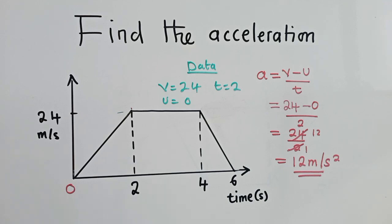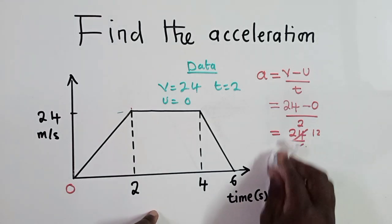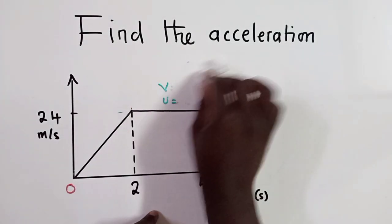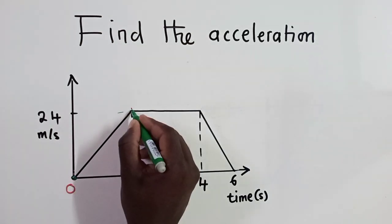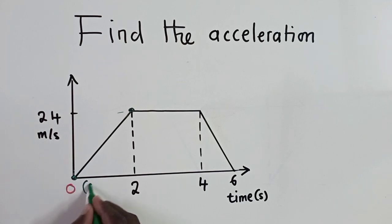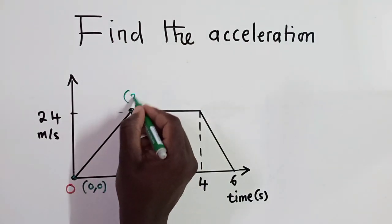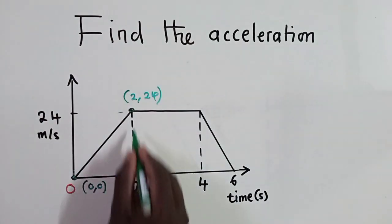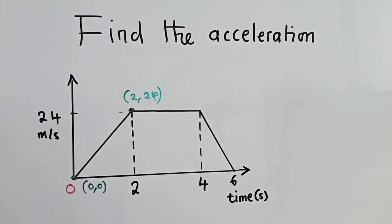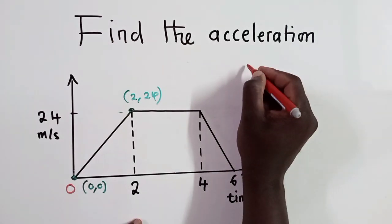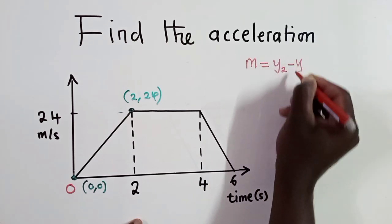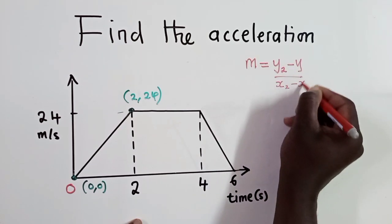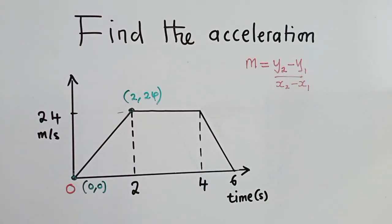So now, the other method that you can use to find acceleration, you just need to identify the coordinates. We know that acceleration is the same as a gradient. So you identify the coordinates at this point under this point. So if you can see here, it's a 0, 0, while here it's a 2, 24. 2, 24. So when you identify the coordinates like that, you use the formula for finding gradient. We know the formula for finding gradient. It's like this. This is the formula for finding a gradient. In case you did not know, this is the formula that you need to know.